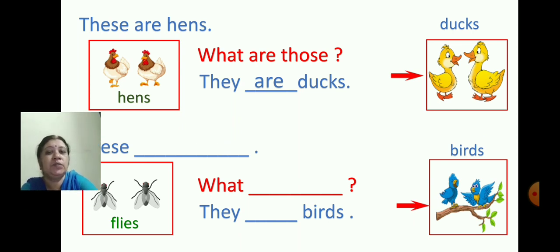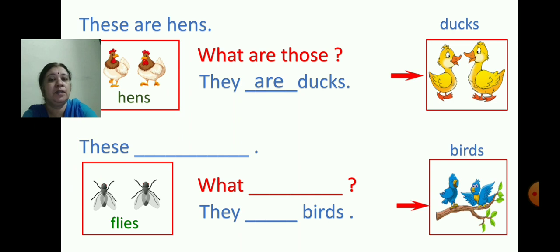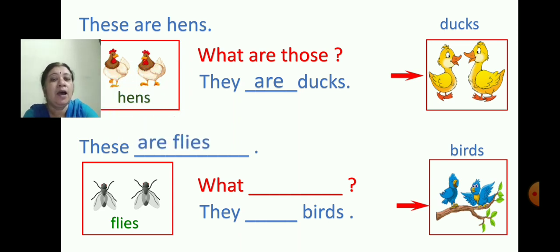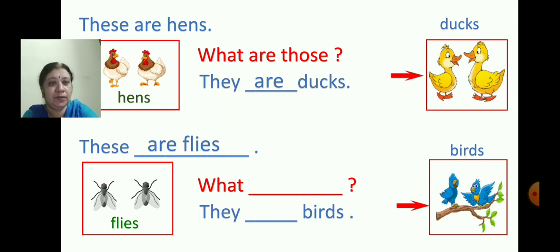Now we will write the next one. See the next picture — flies. The sentence will be: these are flies. F-L-I-E-S — flies. These are flies.